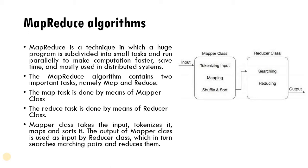The MapReduce algorithm contains two important tasks: map and reduce. The map task is done by the mapper class and the reduce task is done by the reducer class. In the mapper class, tokenization, mapping, and shuffling or sorting is done. In the reducer class, searching and reducing is done. The mapper class takes input, tokenizes it, maps and sorts it, and the output of the mapper class is used as input to the reducer class, which searches for matching pairs and reduces them.